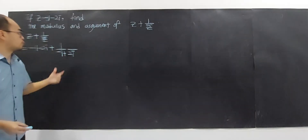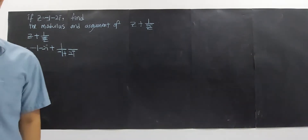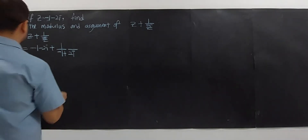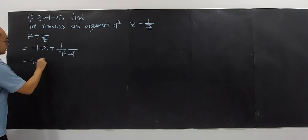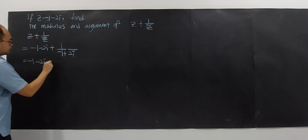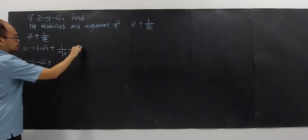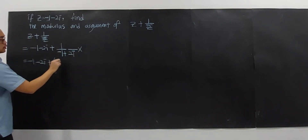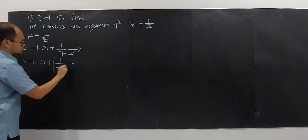Before finding the modulus and argument of this complex number, you have to write this in the form a plus bi. So we have negative 1 minus 2i, plus 1 over negative 1 plus 2i. We need to simplify this by multiplying by the conjugate.